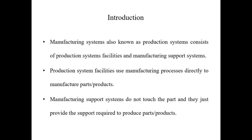The production system facilities use manufacturing processes to manufacture the parts or the products. If the production system facility is used to manufacture individual parts, then the system will involve processing operations. And if the production system facility is going to manufacture products, then the operations involved are the assembly operations.